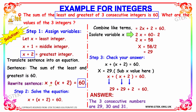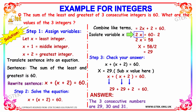Solving the equation: x plus x plus 2 equals 60 becomes 2x plus 2 equals 60. Isolating x, we move the 2 to the other side — 60 minus 2 gives 58. Since we have 2x, we divide both sides by 2: 58 divided by 2 equals 29.